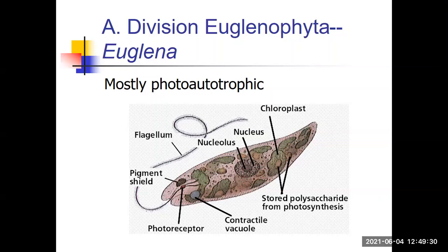The first division is Euglenophyta, and the best example is euglena. This is interesting because euglena is an algae — it's green and goes through photosynthesis. But if there's no light, it can move around and eat. So euglena is both photoautotrophic and heterotrophic. Since it eats, it has a way of moving around. Most of the time it makes food by capturing light through photosynthesis, but if that's not possible, it goes and captures its own food.